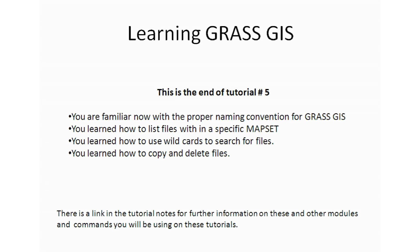This is the end of tutorial number five. By now you're familiar with the proper naming convention for GRASS GIS. You also learned how to list files within a specific mapset, use wildcards to search for files within mapsets, understand the entire GRASS GIS mapset structure, and copy and delete files. Check out the tutorial notes — there are links and information that will help you better understand this tutorial. I hope you come back for the next tutorial.